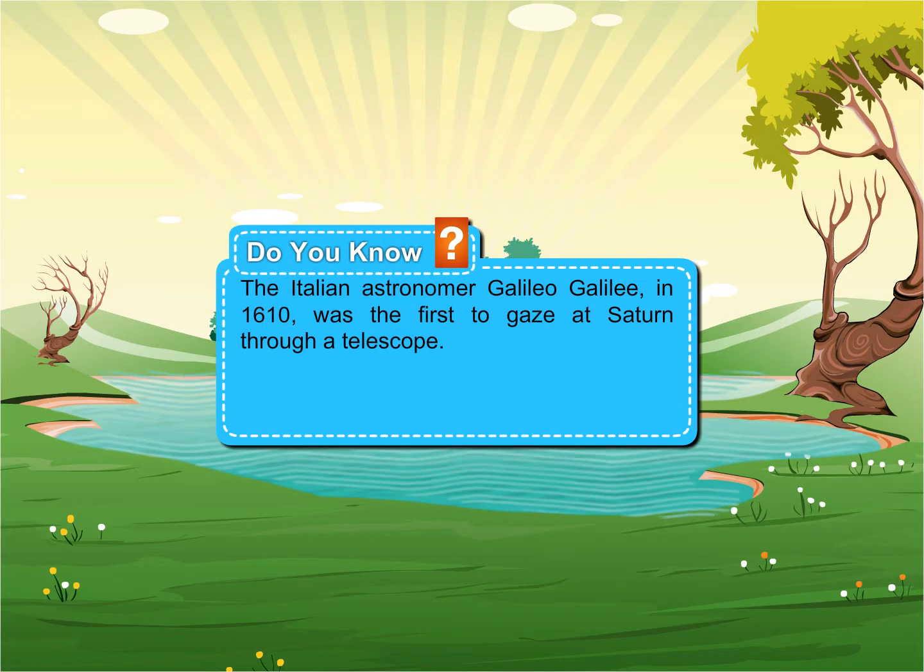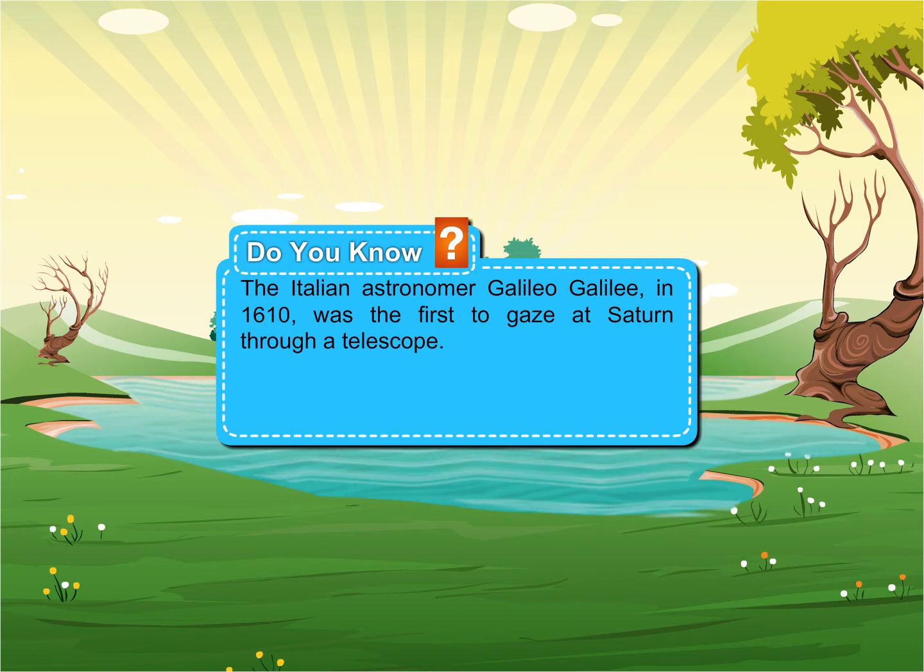The Italian astronomer Galileo Galilei in 1610 was the first to gaze at Saturn through a telescope.